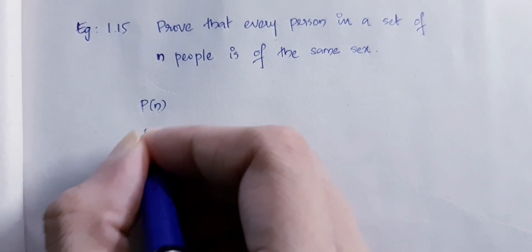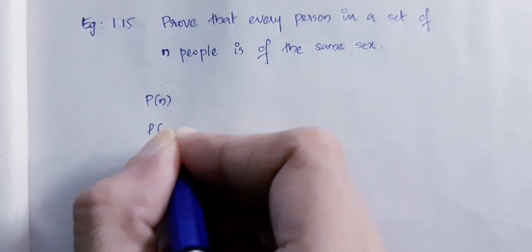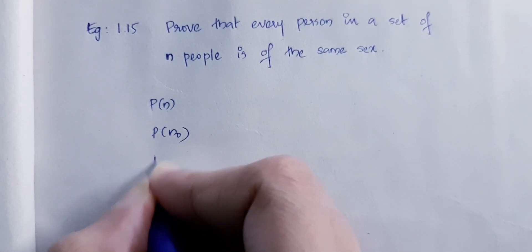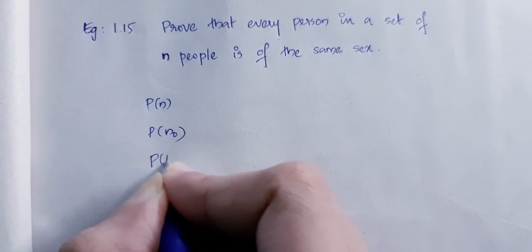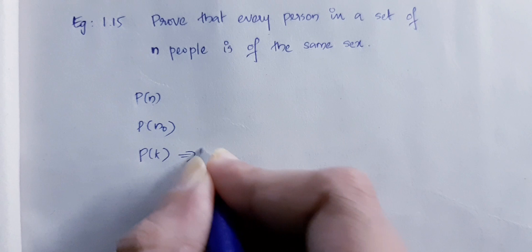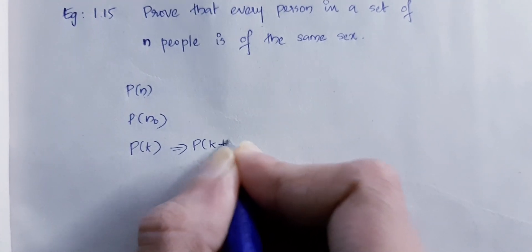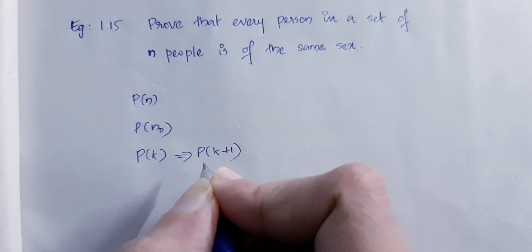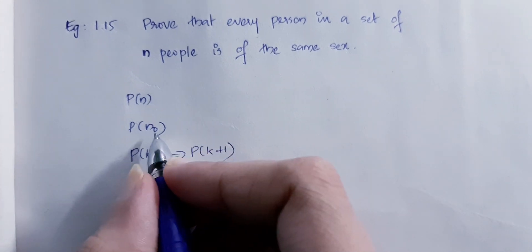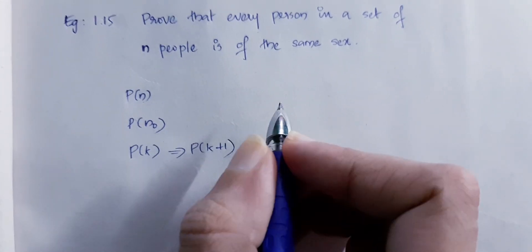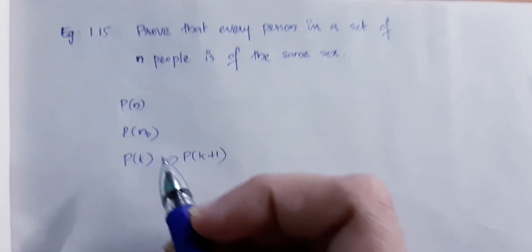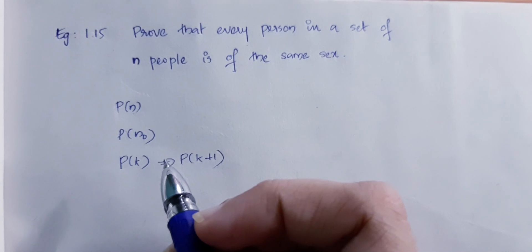P of n is true. Now we consider the value of n. We assume P of k is true. By the principle of mathematical induction, we show it is true for all n. This is the weak version of mathematical induction.